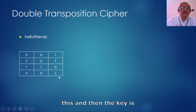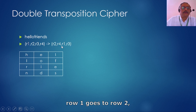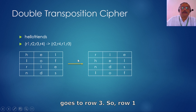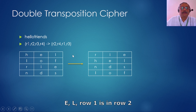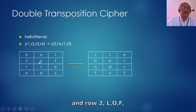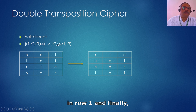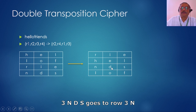The key for rows is: row 1 goes to row 2, row 2 goes to row 4, row 3 goes to row 1, and row 4 goes to row 3. So 'r i e' comes into row 1, the original row 3 comes into row 4, and 'n d s' goes to row 3.